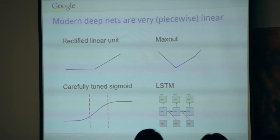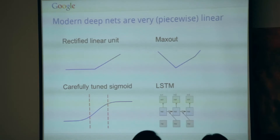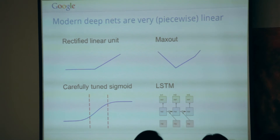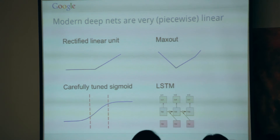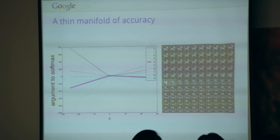If RBF classifiers are so much more robust to adversarial examples, why do all modern neural networks look so linear? Rectified linear units are piecewise linear. Maxout units are piecewise linear. Sigmoid networks, when tuned to operate mostly in their linear regime as needed for successful training, also behave very much like piecewise linear models. LSTMs involve summation over time, the simplest linear operation from one time step to the next. So while linear models are very vulnerable to adversarial perturbation, that also seems to be the basis of all modern deep learning.